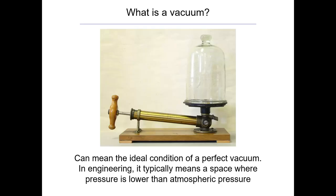So the first question is: what is a vacuum? You probably have a good idea. The word comes from Latin, meaning something like 'void' or 'empty.' The ideal condition of a perfect vacuum is where there's nothing in it. There probably isn't a true perfect vacuum — even outer space has a tiny number of particles in it.